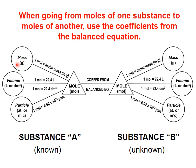That's a fairly easy acronym to remember: Most Valuable Player — mass, volume, particles. And on the far right, we also have mass, volume, particles. The basic unit for amount of substance in the SI system is the mole. We learned in a previous lesson how to convert between mass of some substance and moles, or mass of some substance and atoms of that substance.